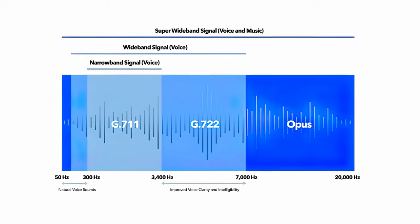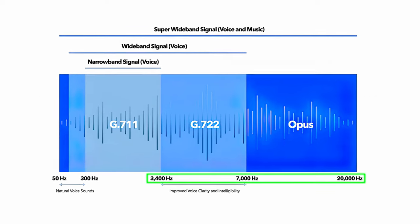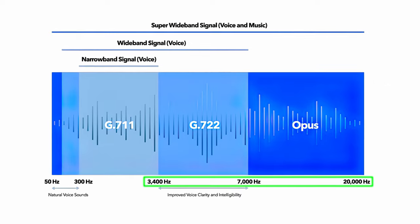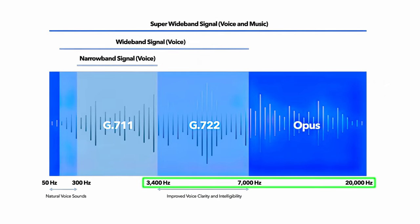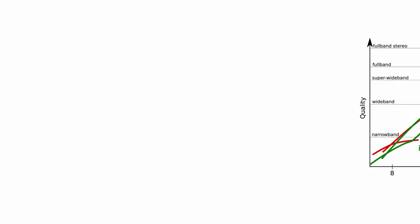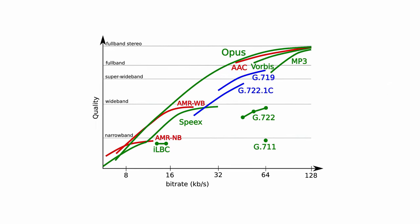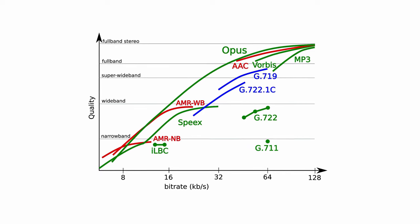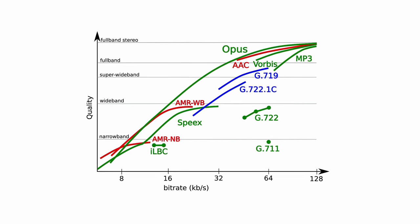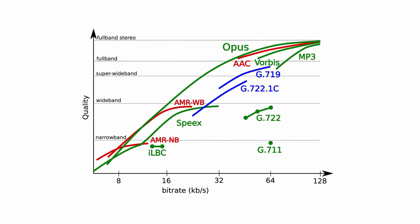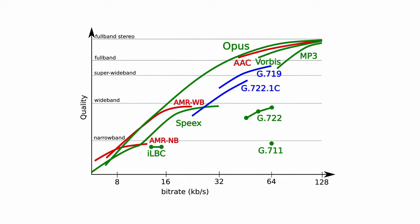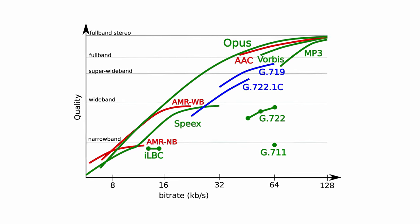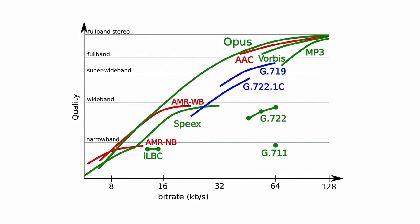HD voice's high sample rate — the number of audio samples a codec takes per second — further improves sound quality. The bit rate measures the speed of data transfers in kilobits per second. Note that while higher bit rates equate to higher sound quality, they also require a higher network bandwidth.